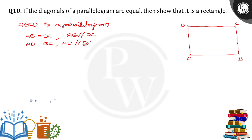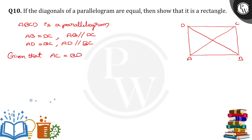This is what we know about the parallelogram. And it is given that the diagonals of the parallelogram are equal, meaning AC is equal to BD. So now we need to show that ABCD is a rectangle.